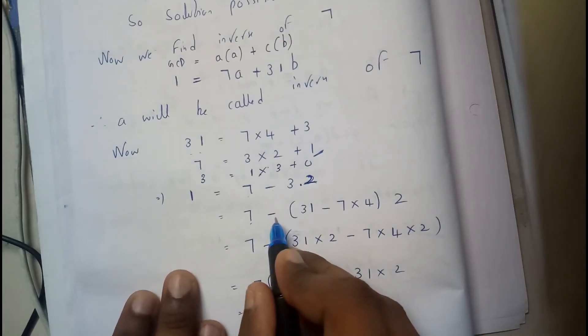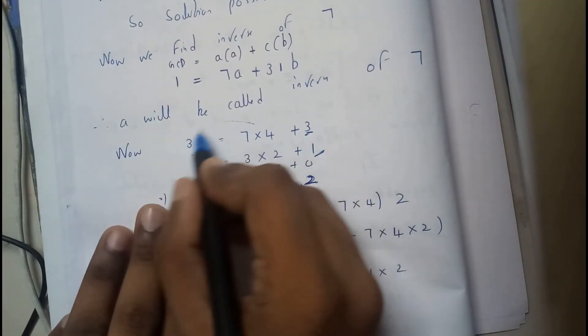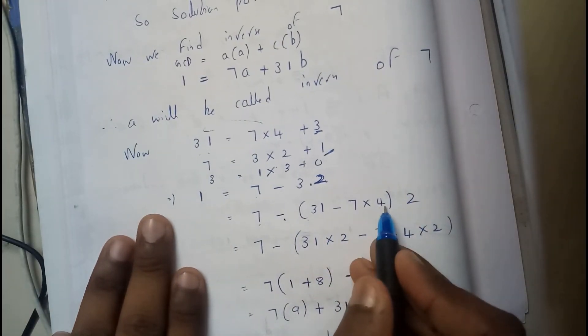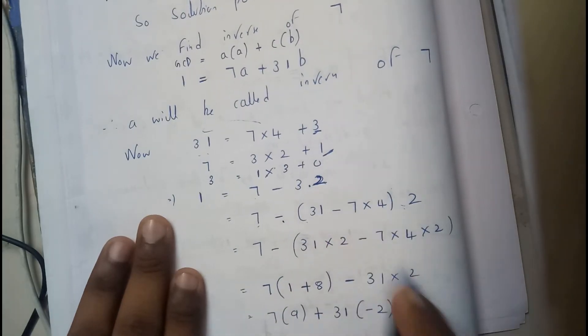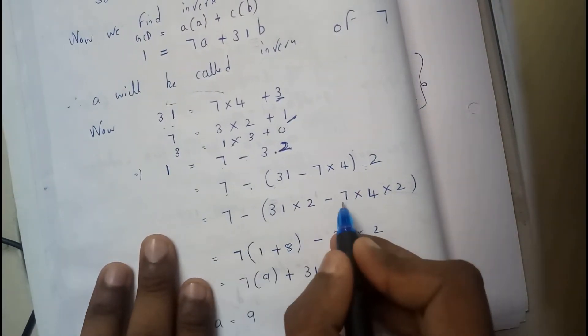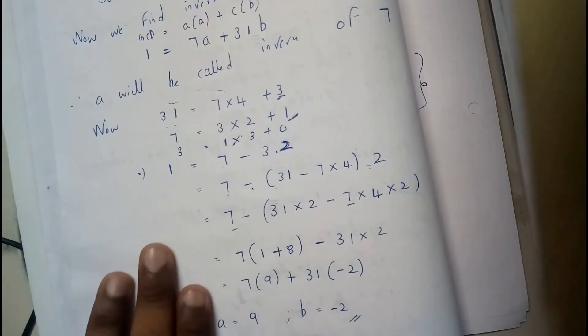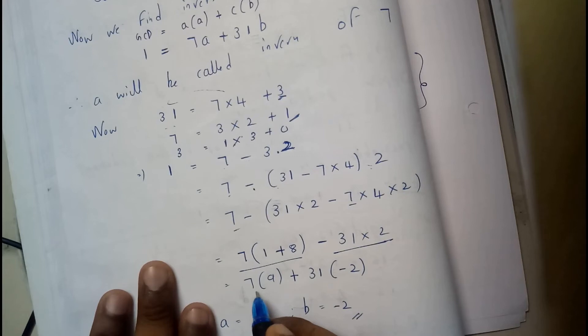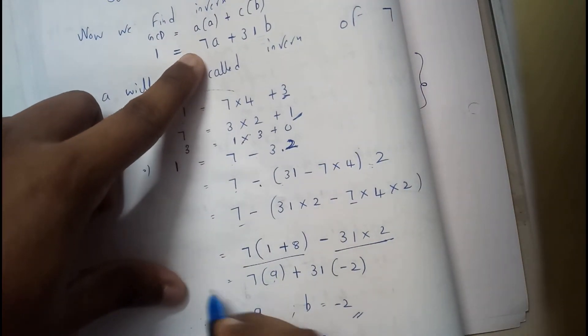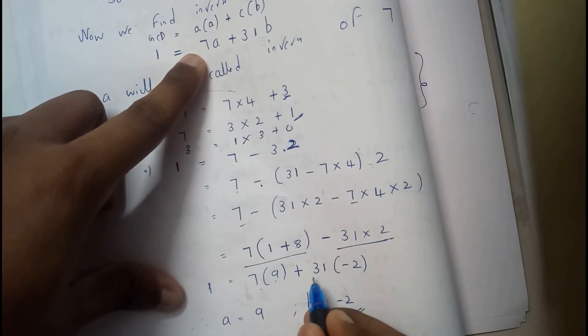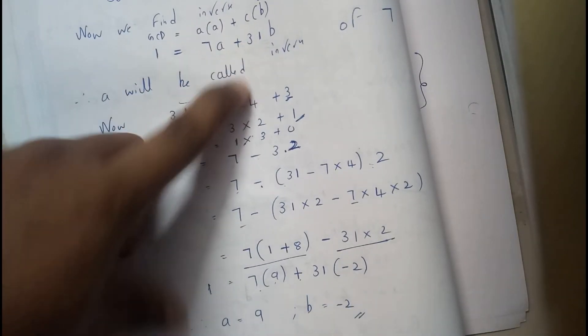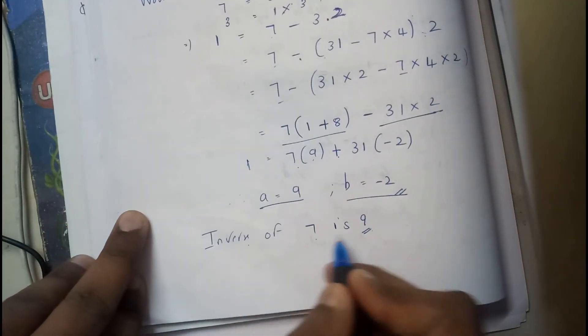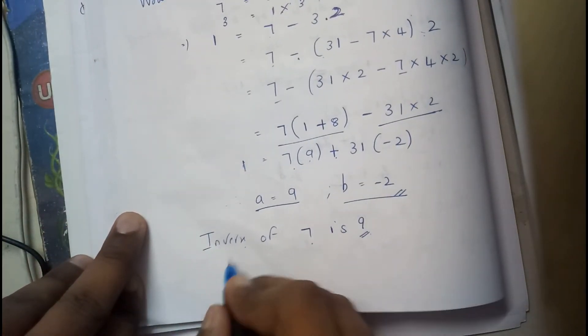Okay, so again further continuing it, 7 minus we can get the value of 3 by transferring that to that side, 31 minus 7 into 4 into 2. 2 is right here. Just further continuing it, 7 here, there is a 7, so I'll be taking 7 as common. I'll be getting this and 31 into 2, it is as usual, 7 into 9. From this, 1 is equals to 7 into 9 plus 31 minus 2. So a is equals to 9, b is equals to minus 2. So inverse of 7 is 9 and inverse of 31 is minus 2.